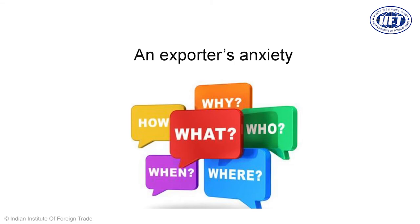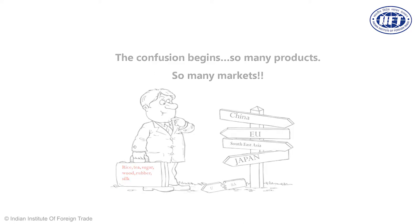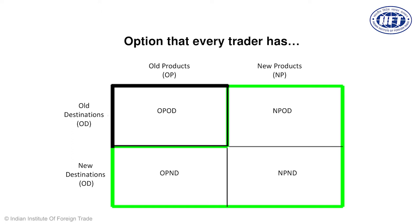To solve these exporters' anxieties, the confusion of a startup exporter begins because there are many products to source and many export markets to participate in — trade fairs, buyer-seller meets, trade missions. Every trader has a choice of selling the same product to the same market that India has been doing traditionally. This is the first box: old product, old destination, where India is doing well in certain sectors — the cliche sectors that companies can pick up for exports.